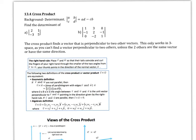Hi, this is 13.4. We're going to do some more things with vectors. In the previous section we did the dot product, which ended up with a scalar. When we do the cross product, we're going to end up with a vector.